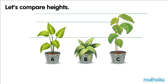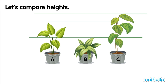Plant C is the tallest. Tallest. Plant B is shorter than plant A and shorter than plant C. Plant B is the shortest. Shortest.